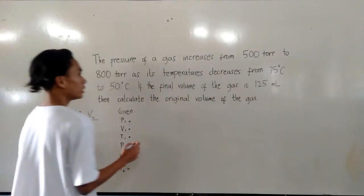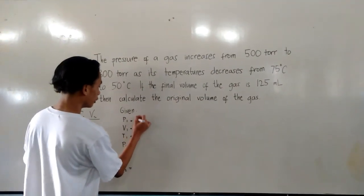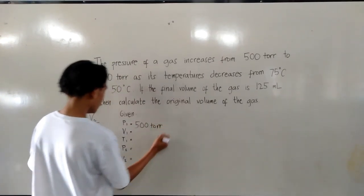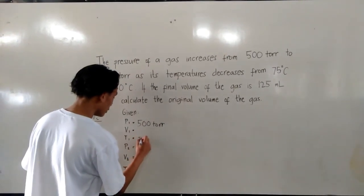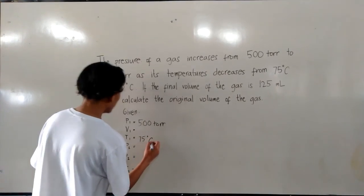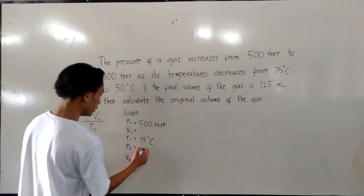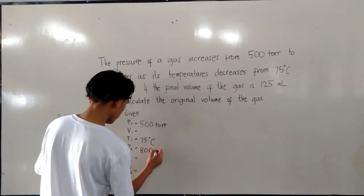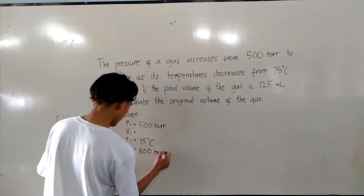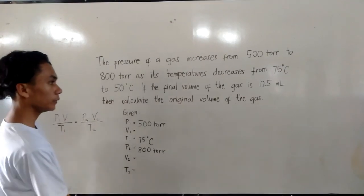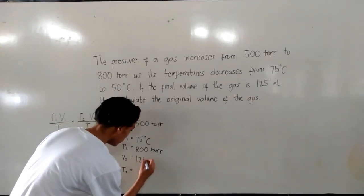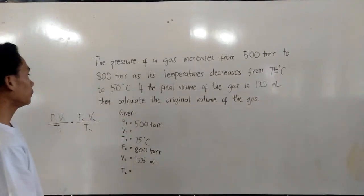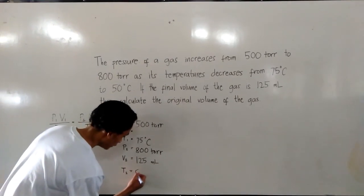The initial pressure is 500 torr. The initial temperature is 75 degrees Celsius. The final pressure is 800 torr. The final volume is 125 mL. The final temperature is 50 degrees Celsius.